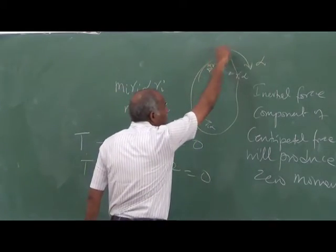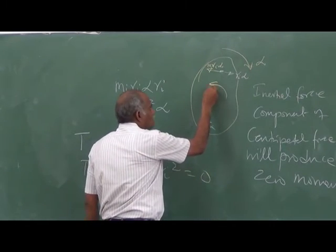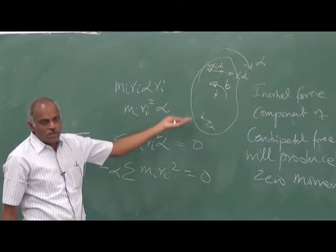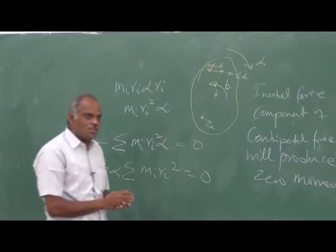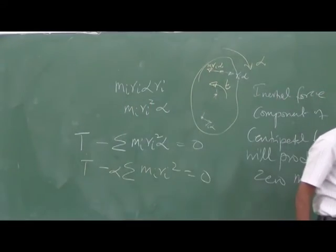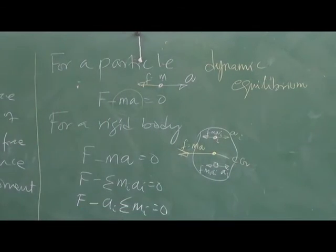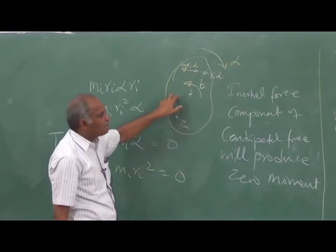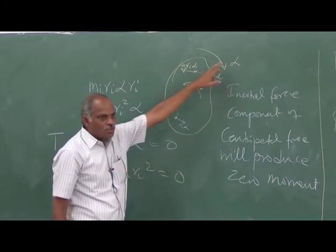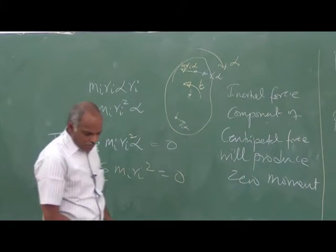When a body has an angular acceleration, you can think of an inertial torque acting on it. According to D'Alembert's principle, you introduce an inertial torque on the system so you can treat it as being in dynamic equilibrium. So there are two things: when the body is subjected to linear acceleration, the inertial force passes through the center of gravity; when subjected to angular acceleration, there will be a torque acting opposite to the angular acceleration.